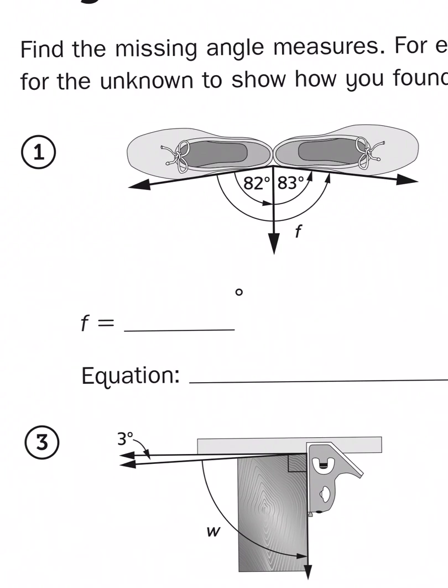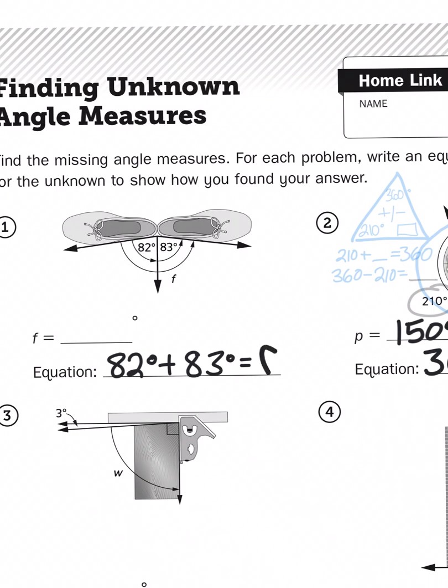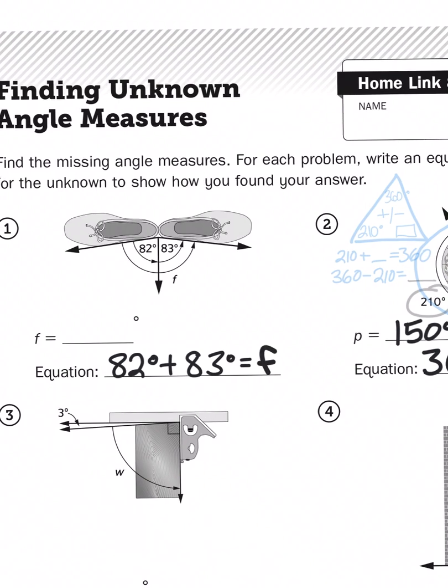So I'm going to create an addition problem. 82 degrees plus 83 degrees equals, and here they use the letter F, for our missing angle measure.